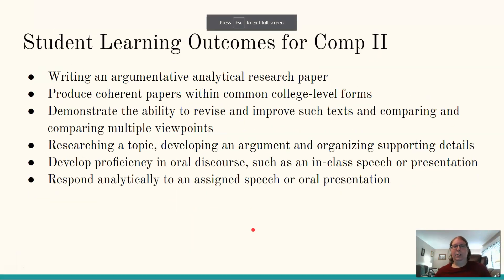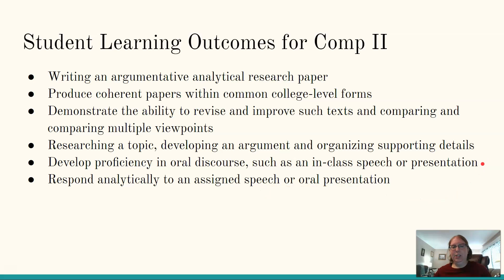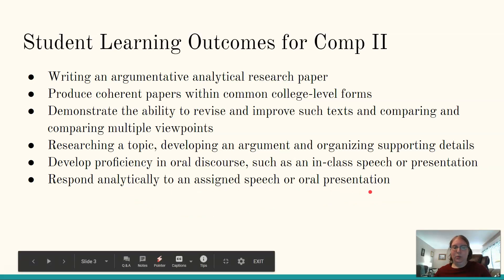These are the student learning outcomes for Comp 2. Comp 2 focuses a lot more on research writing. The outcomes include writing an argumentative research paper, producing coherent papers within common college-level forms, demonstrating the ability to revise and improve such texts, and comparing and contrasting multiple viewpoints — which is what we did within the CTA. Also: researching a topic, developing an argument, and organizing supporting details. New York State also added developing proficiency in oral discourse, such as an in-class speech or oral presentation, and responding analytically to an assigned speech or oral presentation.